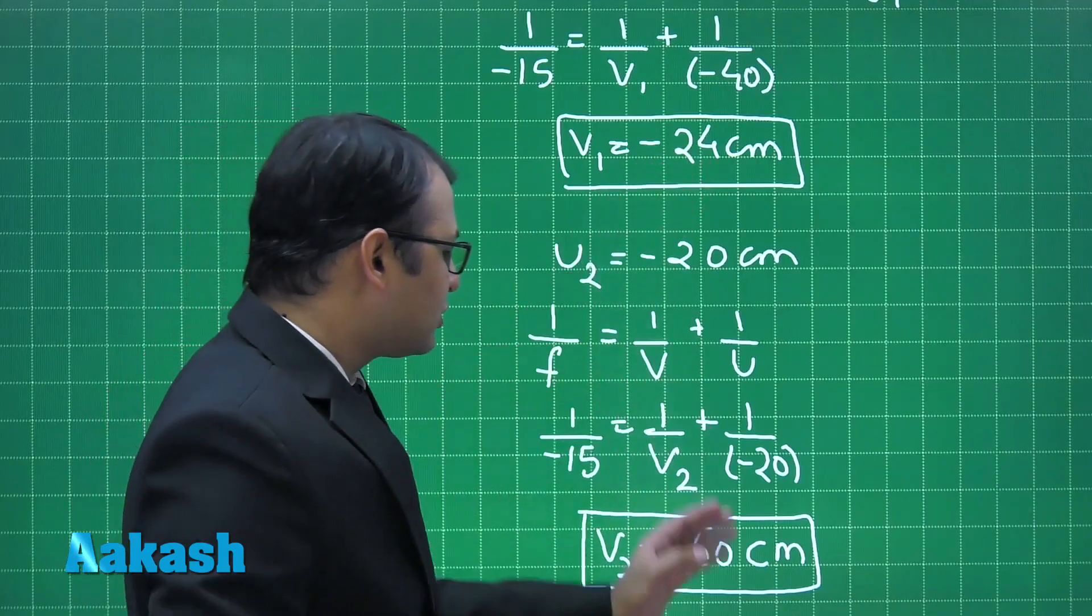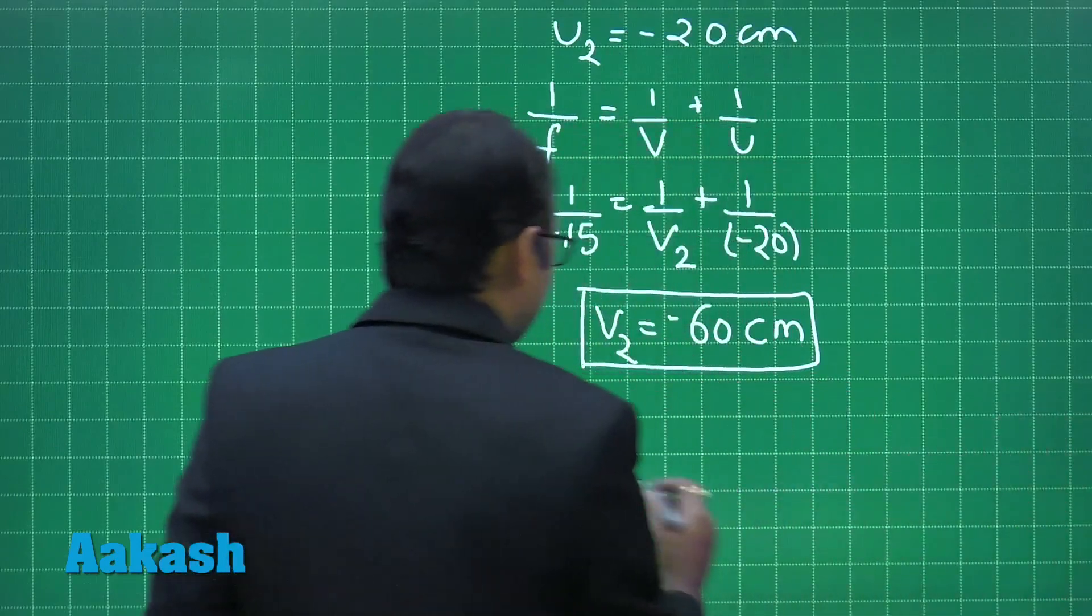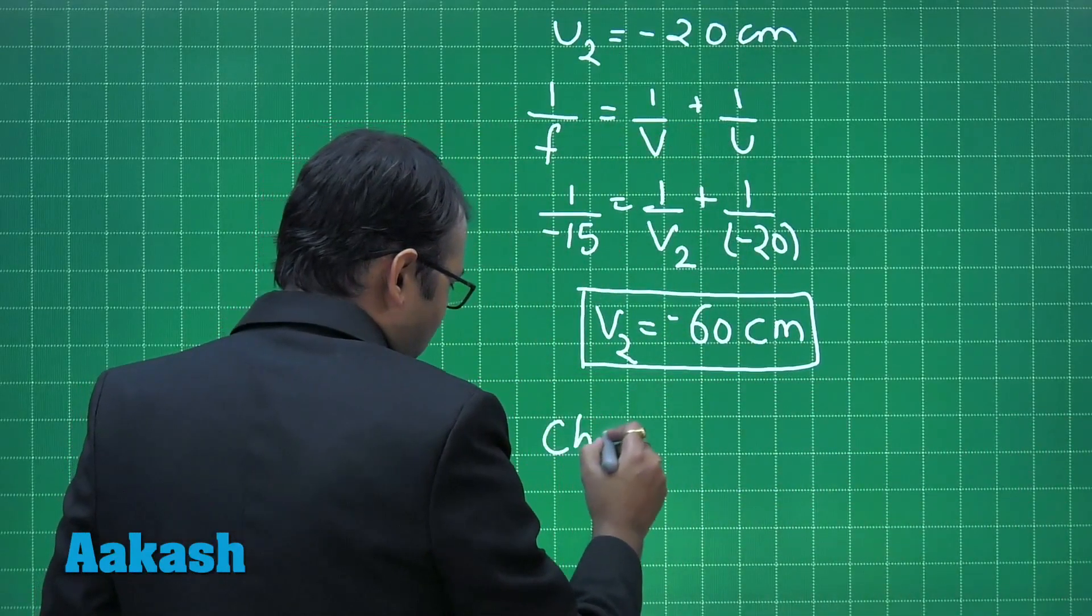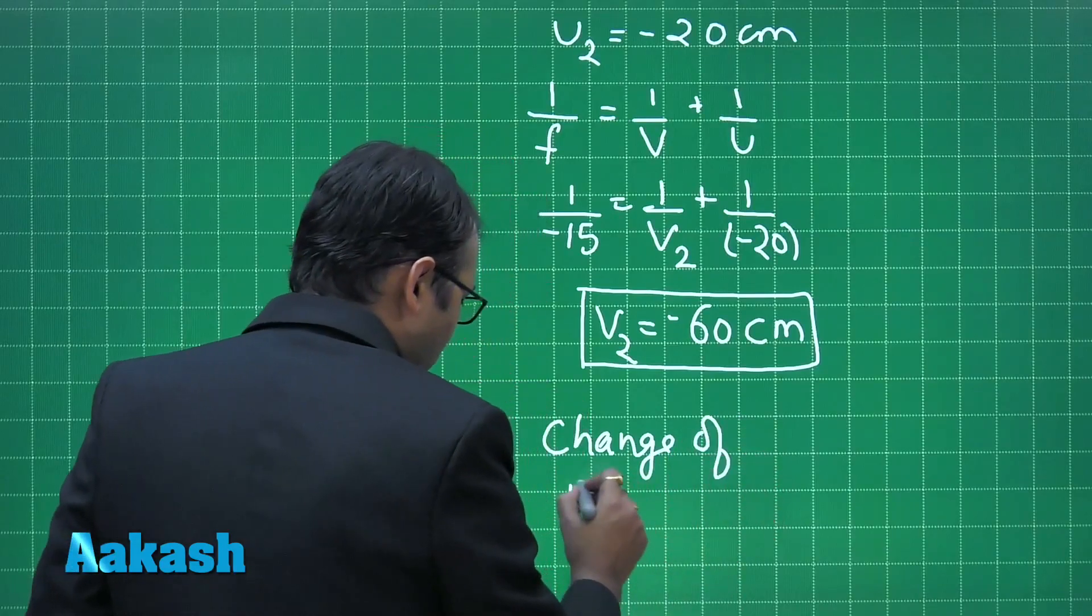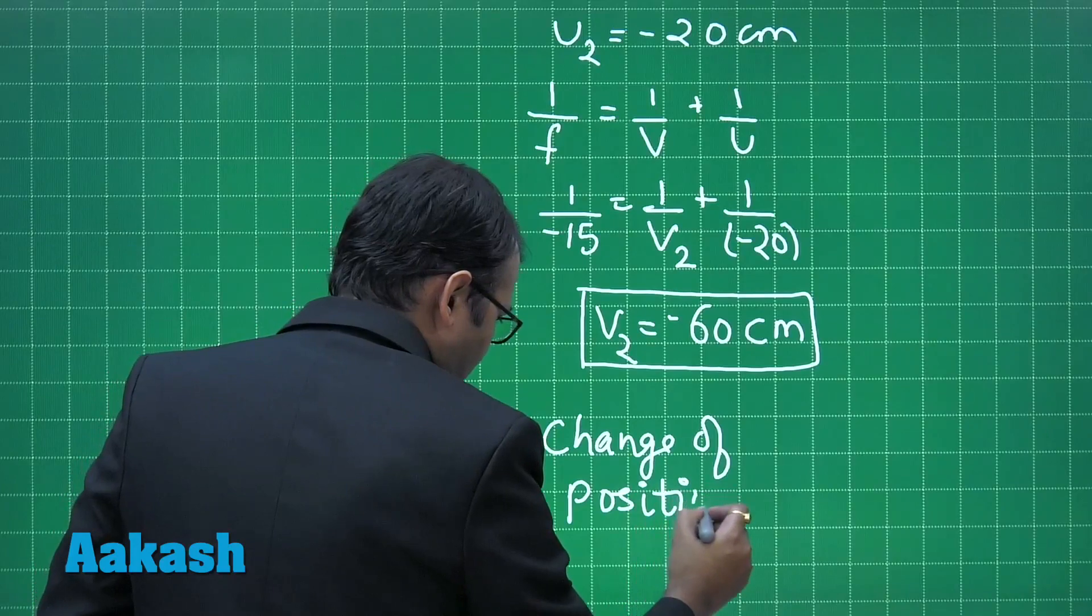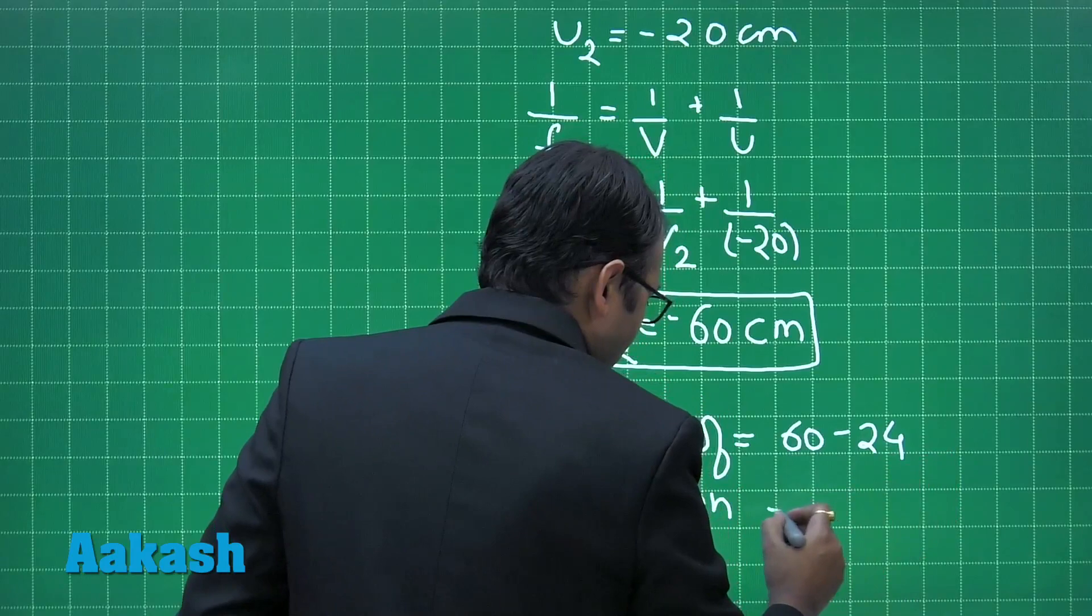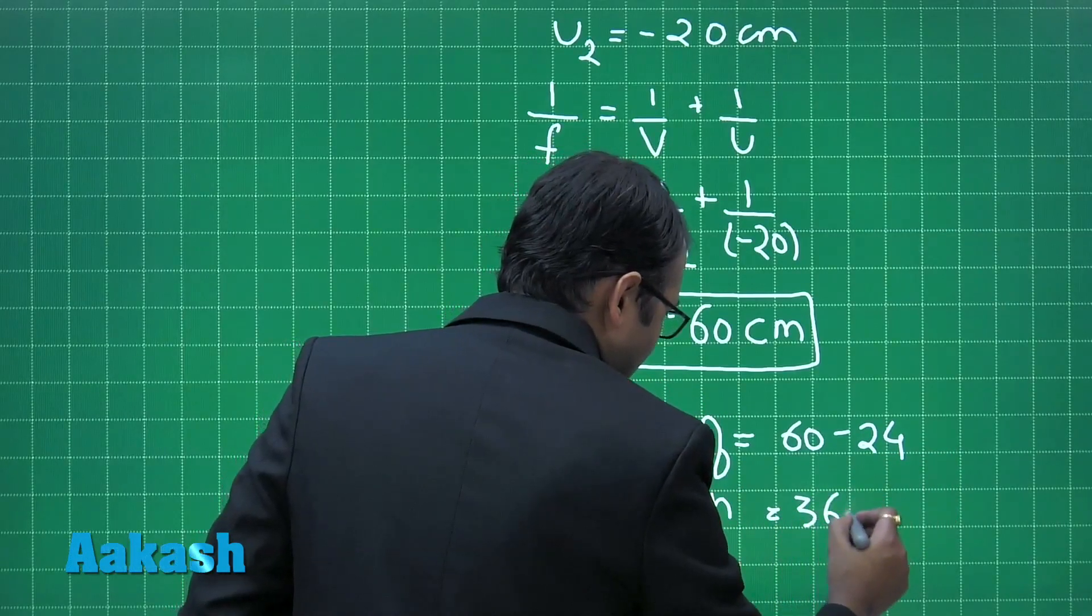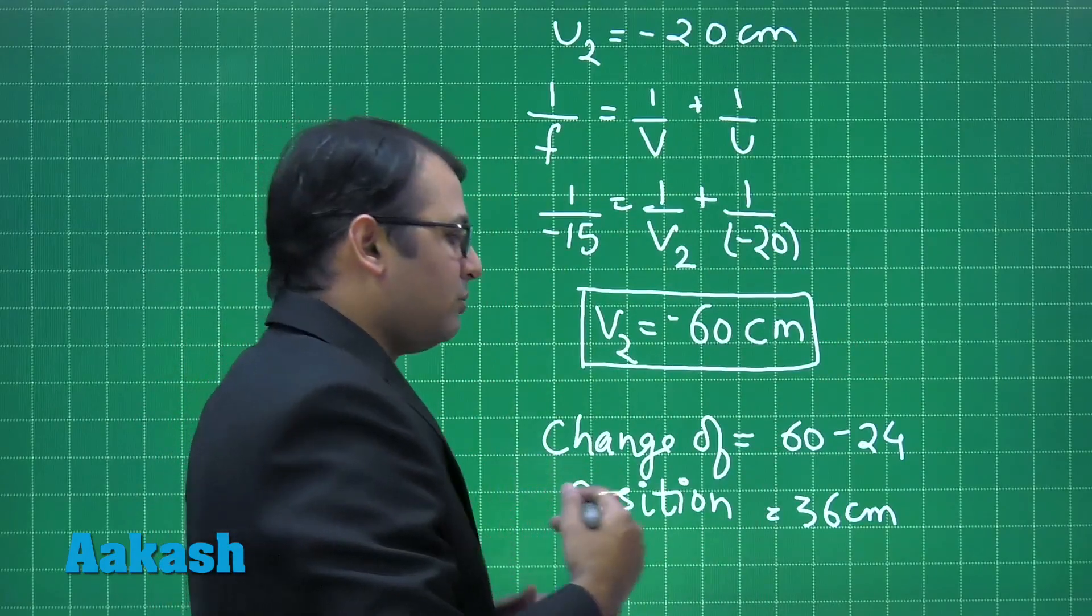So minus 24 to minus 60, how much did the position change? So change of position is equals to 60 minus 24, that is 36 cm. And it was closer to the mirror before, now it has moved farther, so away from the mirror.